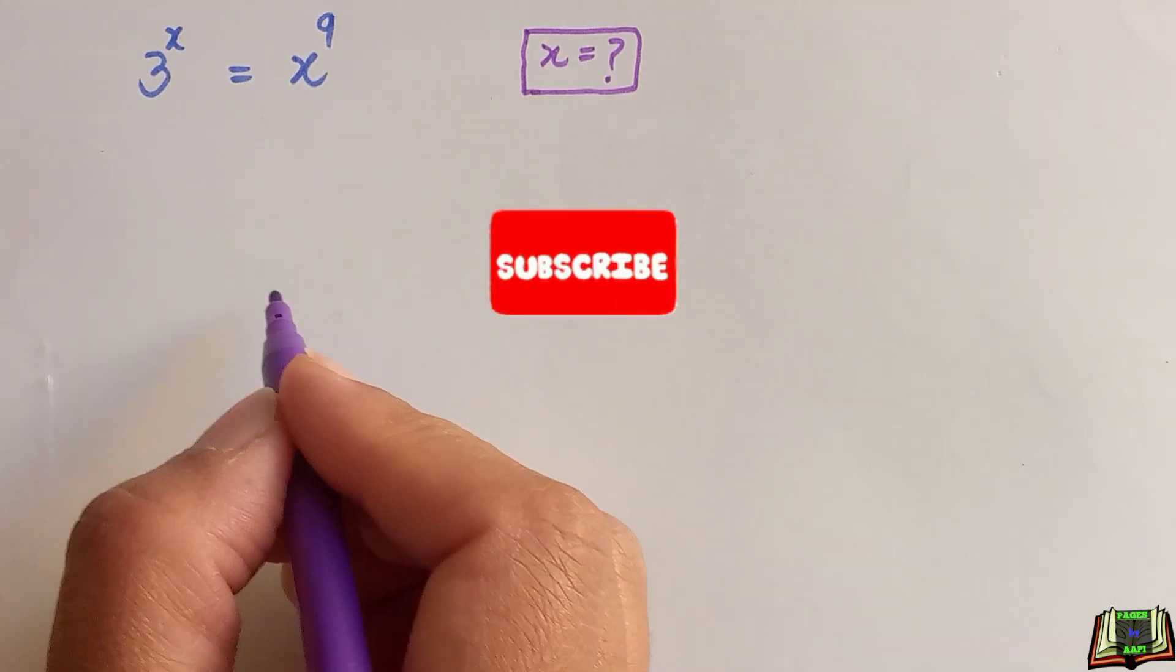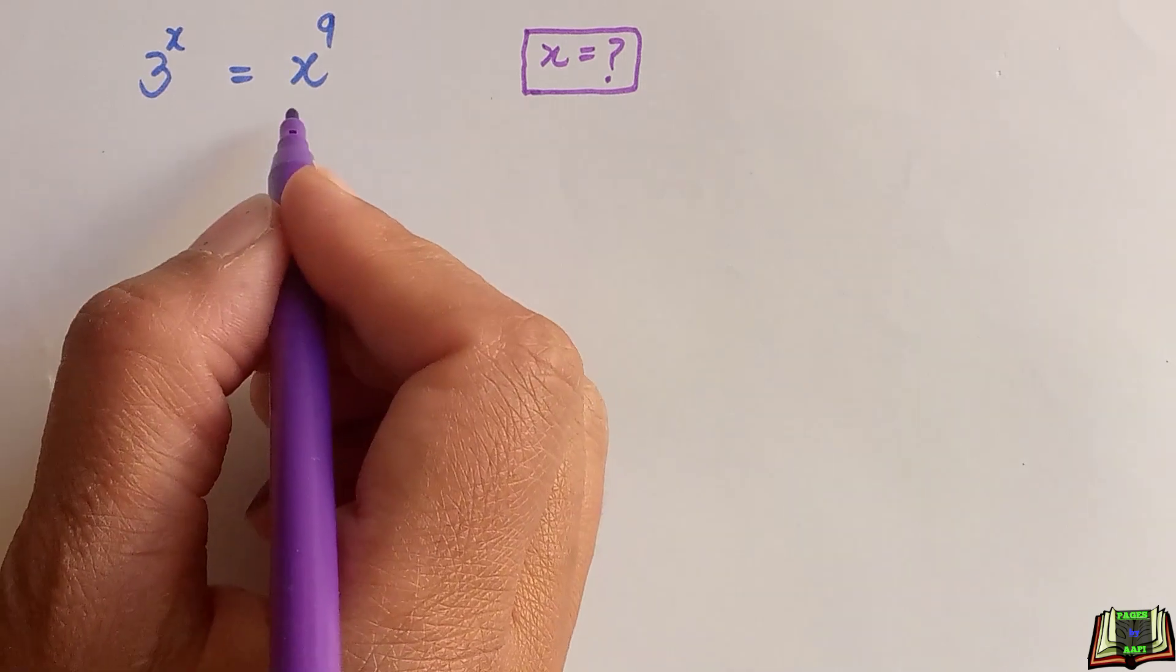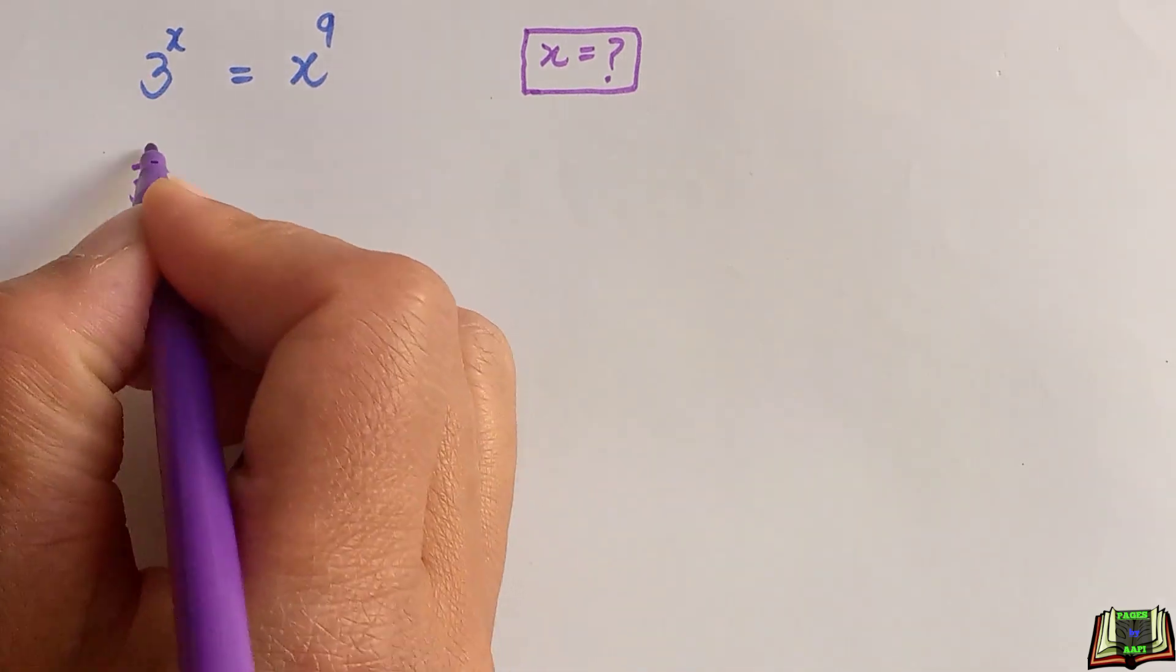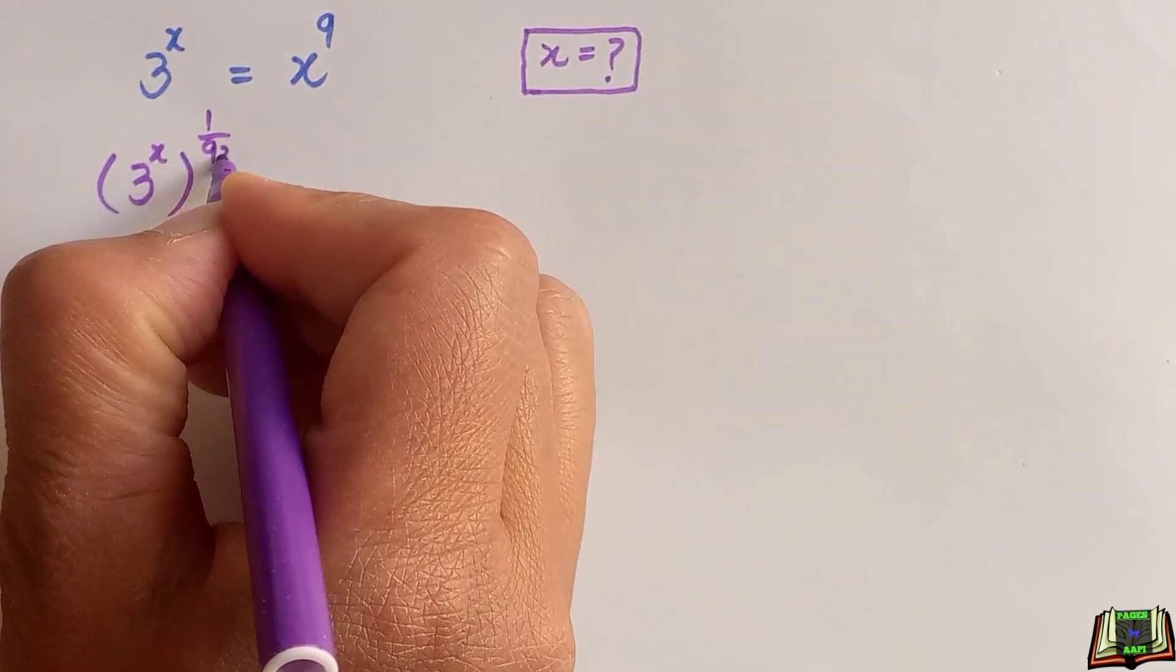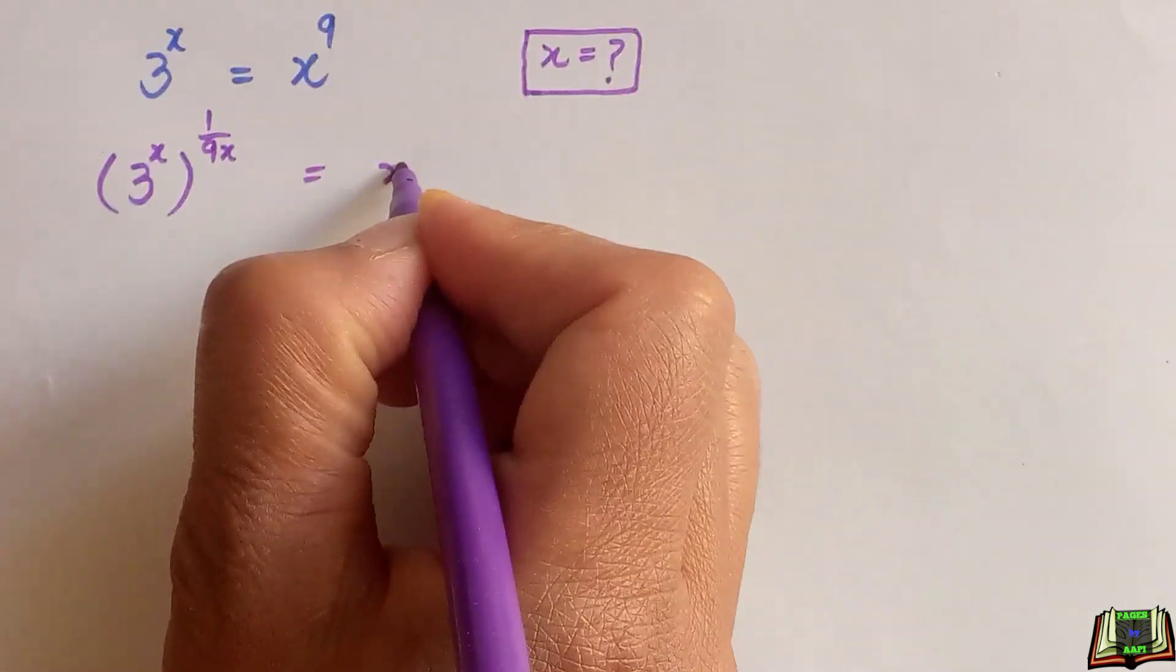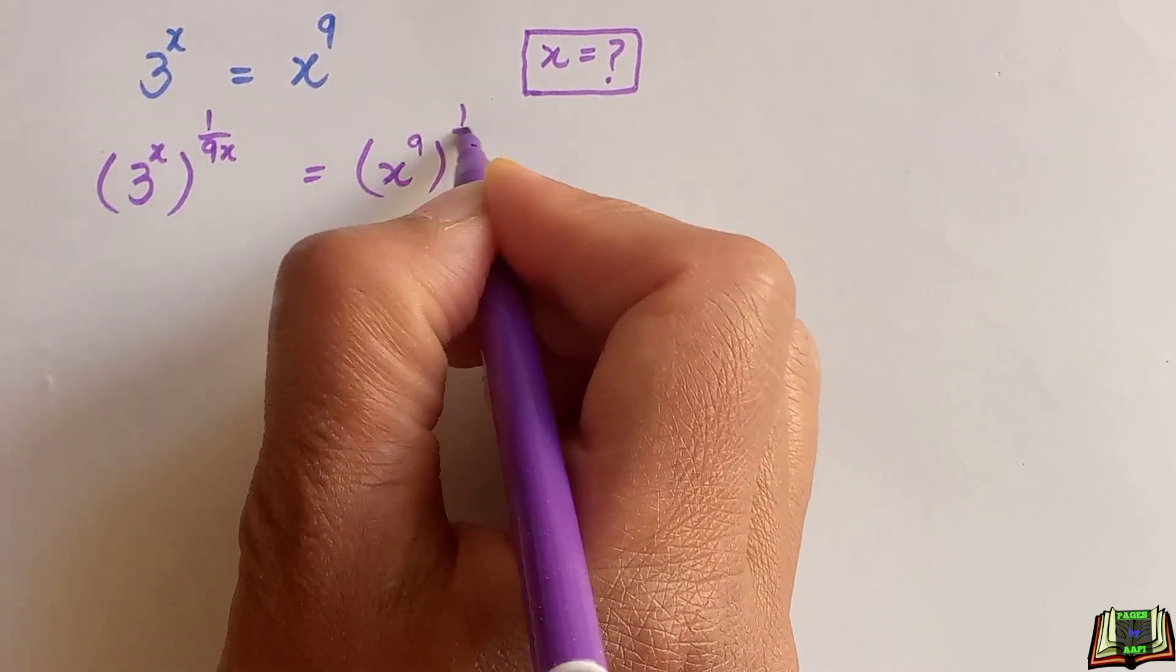In the very first step, we are going to take 1 over 9x power on both sides of this equation. So 3 raised to power x raised to power 1 over 9x, and right hand side x raised to power 9 raised to power 1 over 9x.